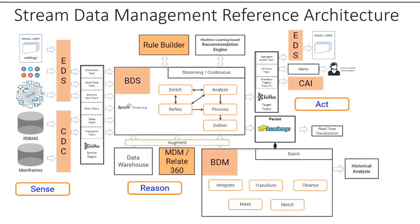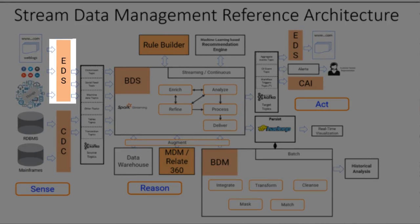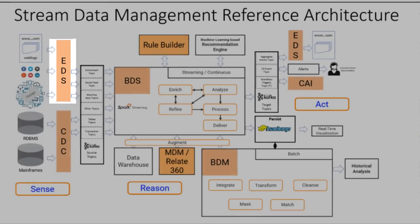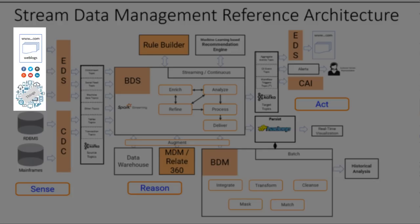In the reference architecture for stream data management with Apache Kafka as the message hub, you can see the Sense, Reason, Act framework in action. Edge Data Streaming, the edge data collection and processing solution, collects data from streaming sources like web logs, click streams, social media feeds, and IoT devices, and loads the data to Kafka.